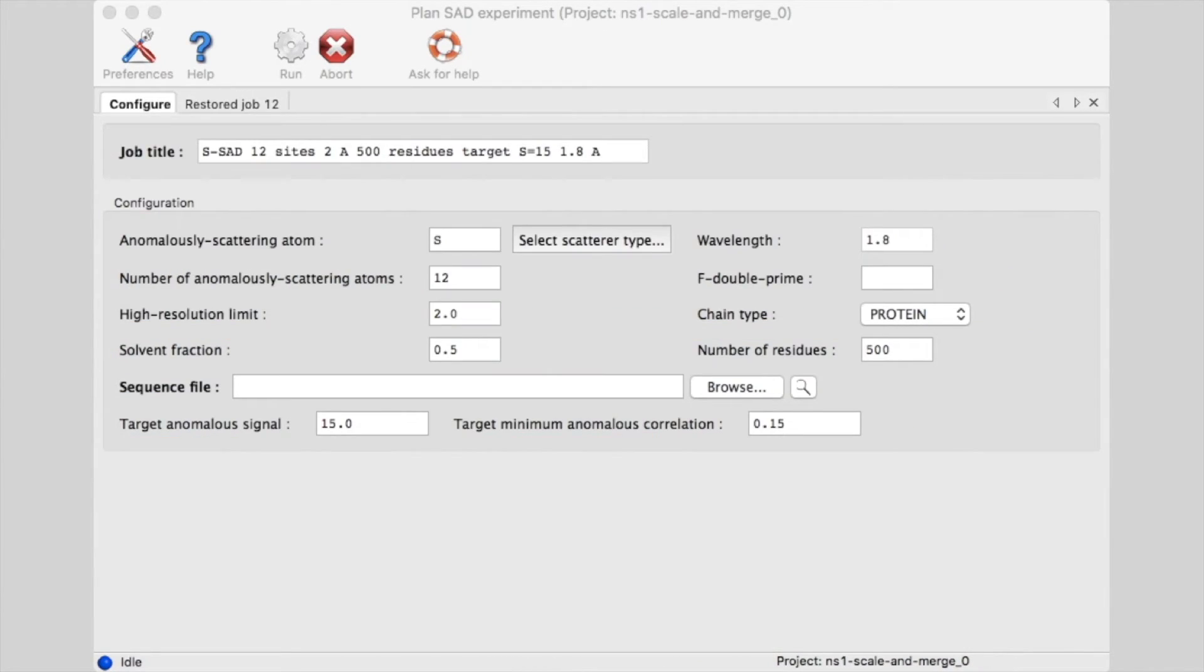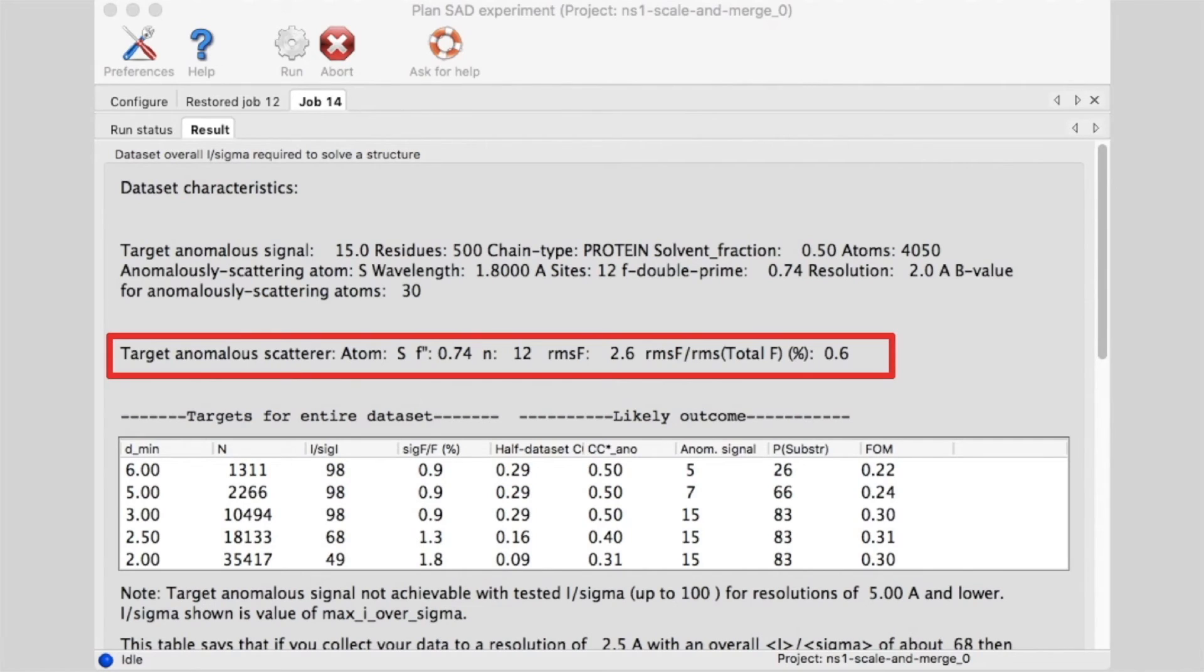Now let's see what would happen if everything were the same, except we only had sulfur as the anomalous scatterer, and we collected the data at a wavelength of 1.8 angstroms. In this case, the F'' is only 0.74, much less than the 3.84 we found for selenium.